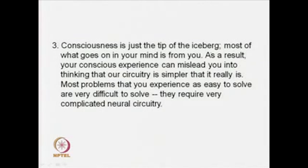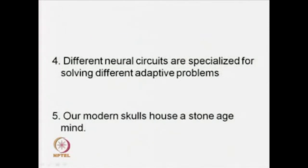According to Tooby and Cosmides, the five principles of evolutionary psychology are: Principle one — the brain is a physical system like a computer, a wet computer, and the job of its circuits is to generate behavior appropriate to your environmental circumstances. Principle two — our neural circuits were designed by natural selection to solve problems that our ancestors faced during our species' evolutionary history, certainly not current problems. Principle three — consciousness is just the tip of the iceberg; most of what goes on in your mind is hidden from you, and your conscious experience can mislead you into thinking that our circuitry is simpler than it really is. Most problems experienced as easy to solve require very complicated neural circuitry. Principle four — different neural circuits are specialized for solving different adaptive problems. Principle five — our modern skulls house a stone age mind.